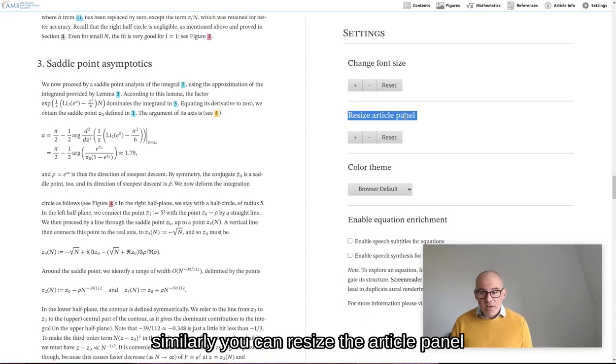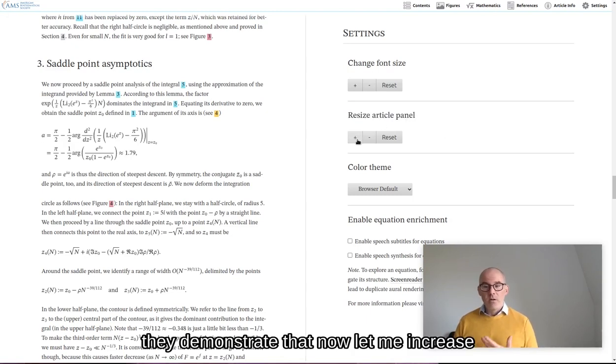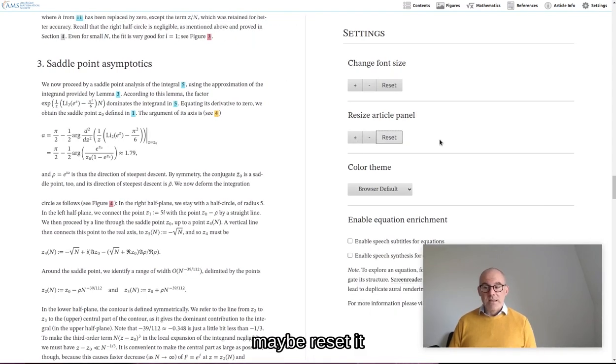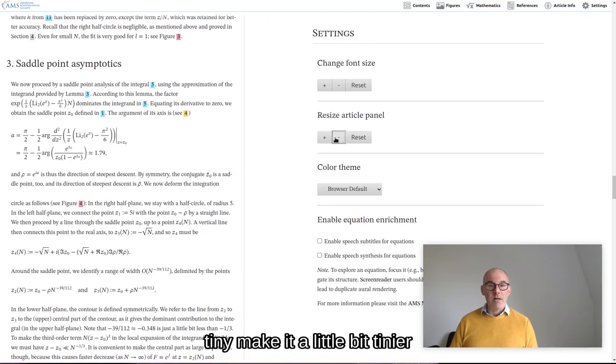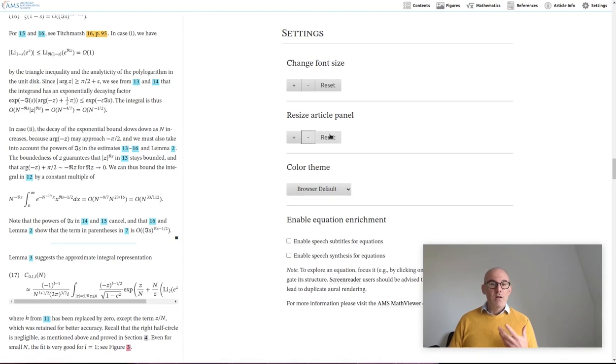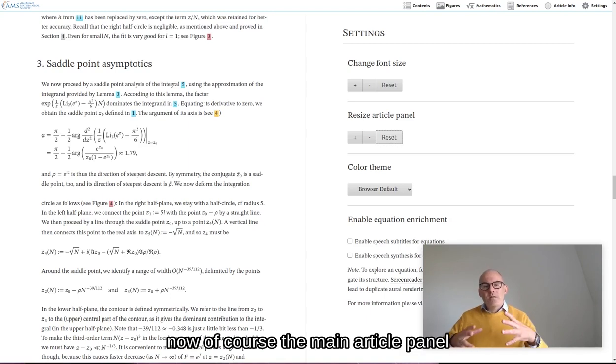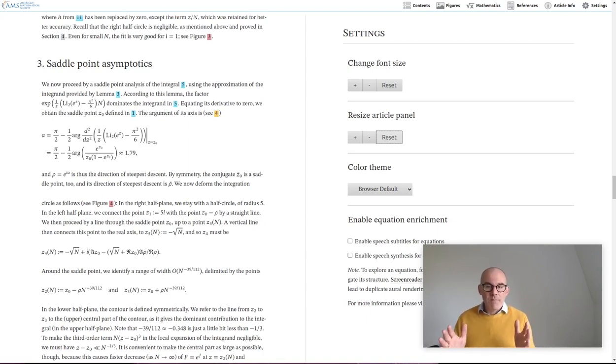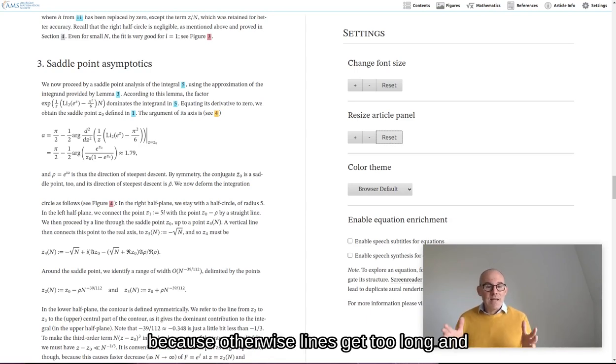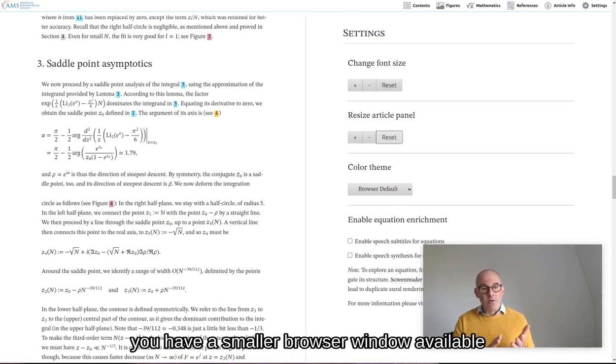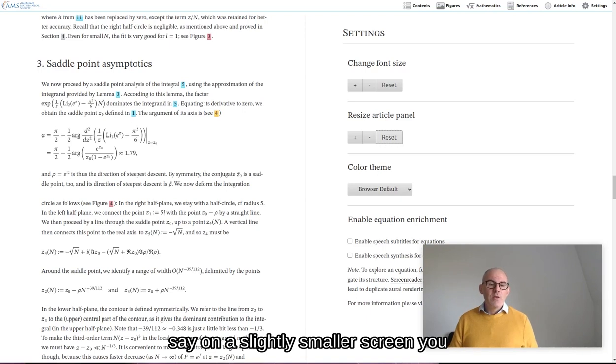Alright, I've reset all my zoom levels so that we can continue in the base setup. Similarly, you can resize the article panel. I'll demonstrate that now. Let me increase it a little to give it more space. Maybe reset it. Make it a little bit tinier because we want it to take less space and reset it again. Now, of course, the main article panel has a maximum width. Because otherwise, lines get too long and become unreadable. But in a situation where you have a smaller browser window available, say on a slightly smaller screen, you may want to tweak this a little to whatever you need. And it's hopefully easy to do via the settings panel.